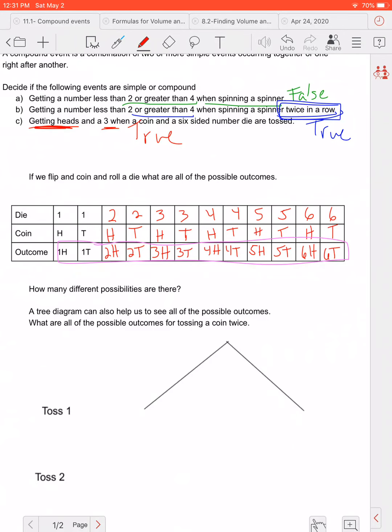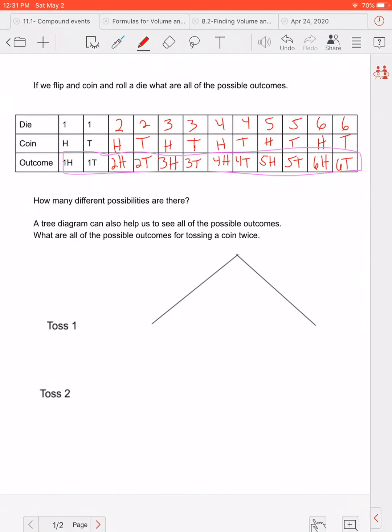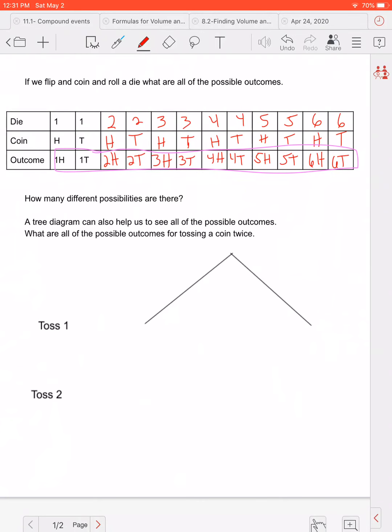Another way to figure out all the possible outcomes is to have what we call a tree diagram. Okay so we can put it in a chart. Sometimes it's helpful, sometimes it's more helpful to have it in a tree diagram. So we want to find all the possible outcomes of tossing a coin twice. Okay so in the first toss my options are heads or tails. So notice one row here was my first toss.